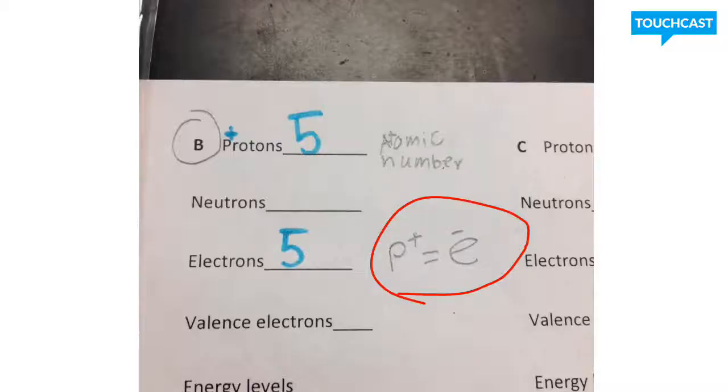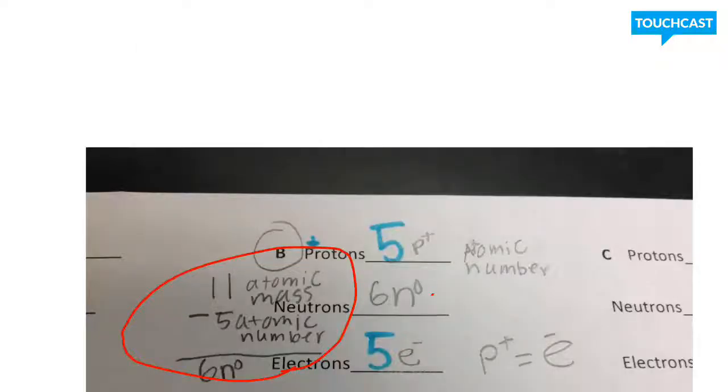Now let's find neutrons. Sorry, I messed up again. Basically, we're finding the number of neutrons. To find the number of neutrons, you take the atomic mass and round it up or down, depending on the typical math rules: four and below rounds down, five and above rounds up. Once you round the atomic mass, then you subtract the atomic number from it, and that gives you the number of neutrons.